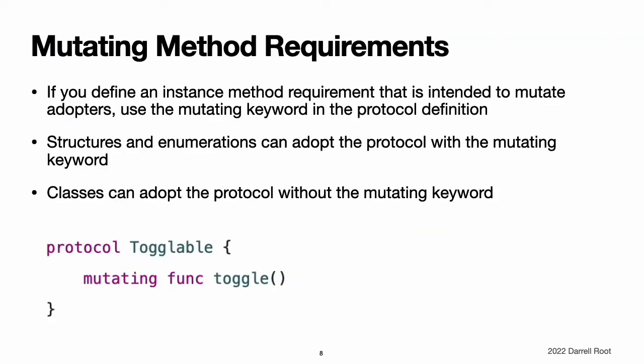Mutating method requirements. It is sometimes necessary for a method to modify or mutate the instance it belongs to. For instance, methods on value types — that is, structures and enumerations — you place the mutating keyword before a method's func keyword to indicate that the method is allowed to modify the instance it belongs to and any properties of that instance. If you define a protocol instance method requirement that is intended to mutate instances of any type that adopts the protocol, mark the method with the mutating keyword as part of the protocol's definition. This enables structures and enumerations to adopt the protocol and satisfy that method requirement. Note: if you mark a protocol instance method requirement as mutating, you do not need to write the mutating keyword when writing an implementation of that method for a class. The mutating keyword is only used by structures and enumerations.